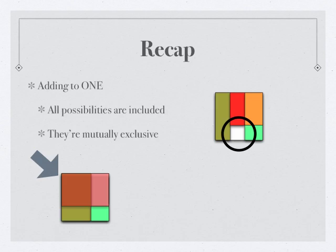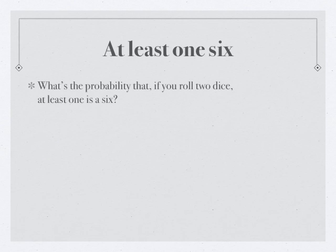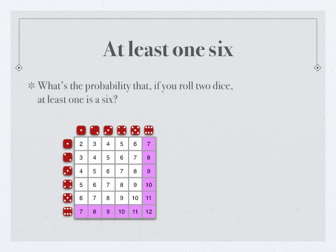So let's do a problem. This is related to the one we were doing in class. If you roll two dice, what's the probability that at least one of them is a six? So we could do an area model. And that would look like this, where we've divided up rows and columns into one, two, three, four, five, and six.